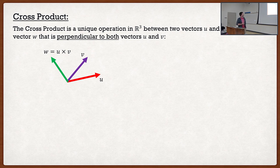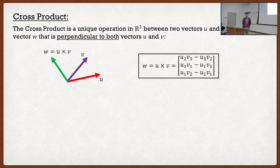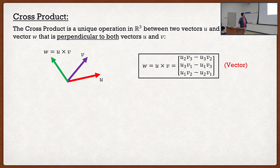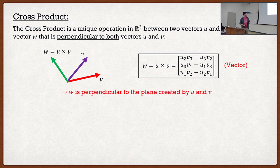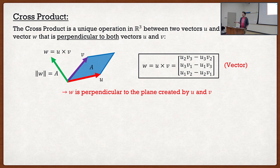If I have two vectors U and V and I cross them together, my resultant is perpendicular to both. This has a lot more properties. The vectors U and V create a parallelogram, and one important property we didn't discuss in N-130 is that the area of this parallelogram is actually equal to the norm of the resultant vector — that might appear on an exam.